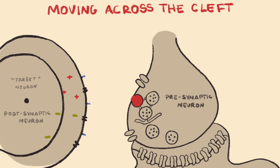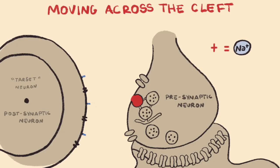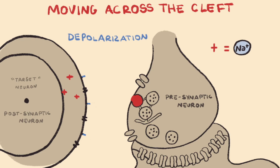This rush of ions into the postsynaptic neuron will change the electrical charge inside, causing a type of graded potential called a postsynaptic potential. This change in electrical charge may be increasingly positive with the opening of sodium channels and sodium moving in, resulting in depolarization, which is excitatory. This occurs when excitatory neurotransmitters bind to their receptors.